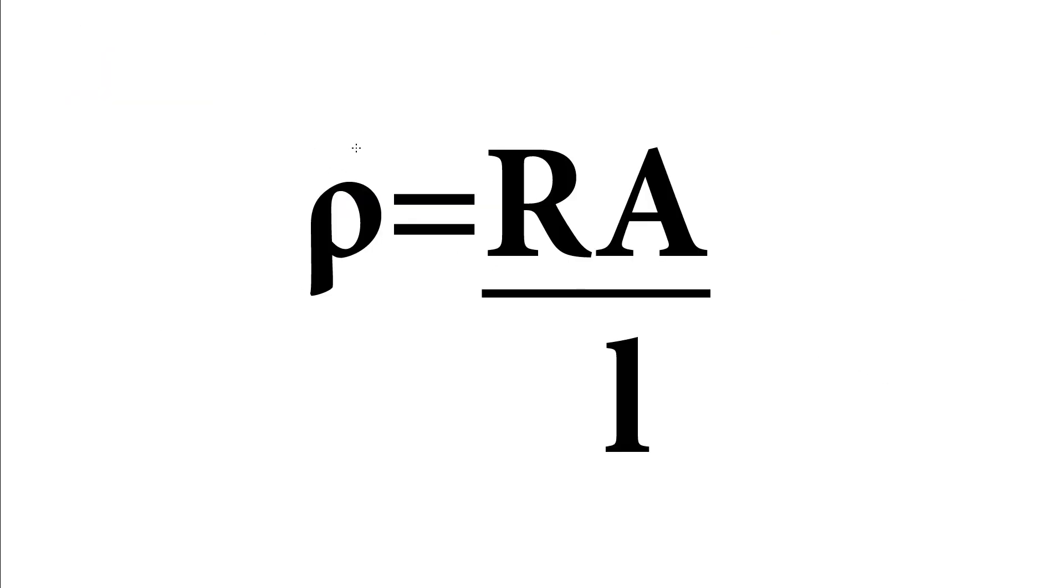And we do that with this equation taking into account the size and shape of it. So we can nip back to here. Now we've got a slightly better understanding of what resistivity is. We can make sure we've defined each of these terms. And so the R, that is the resistance, and therefore is measured in ohms.